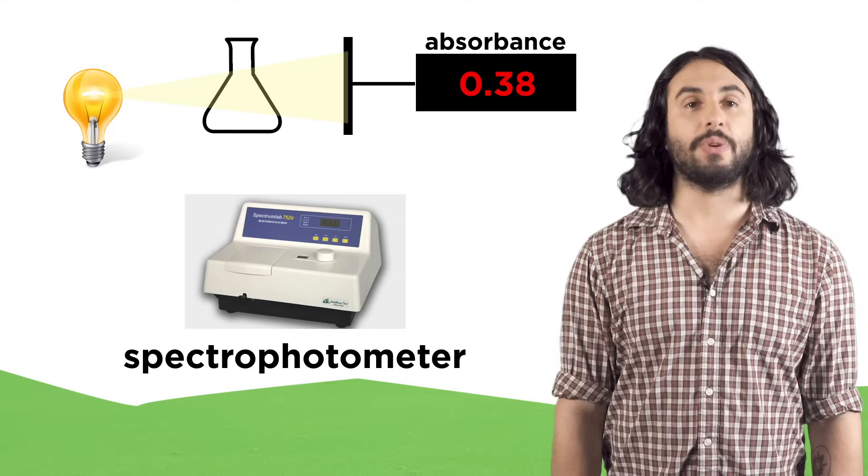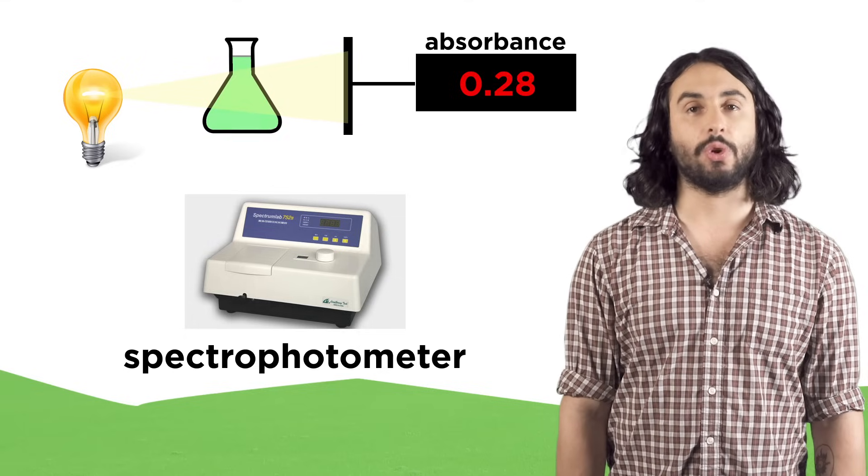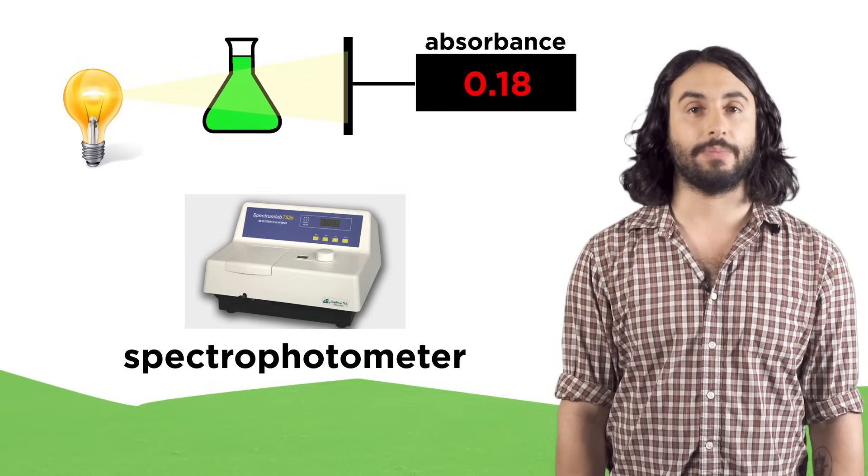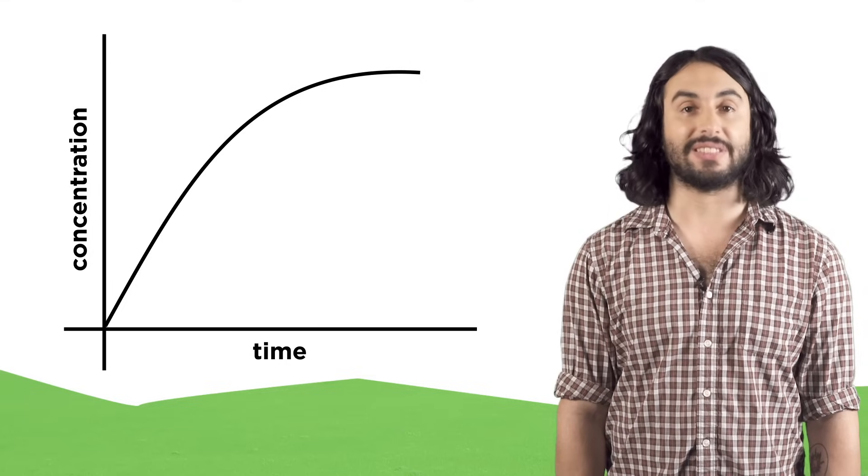If a reaction goes from clear to a colored solution we can monitor the light absorbance using a spectrophotometer. But whatever we do, we can use the data to plot concentration versus time.